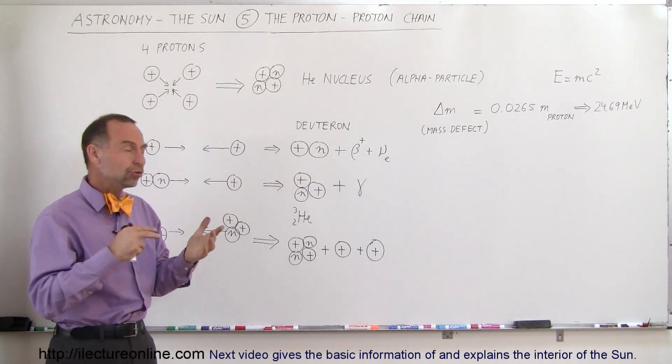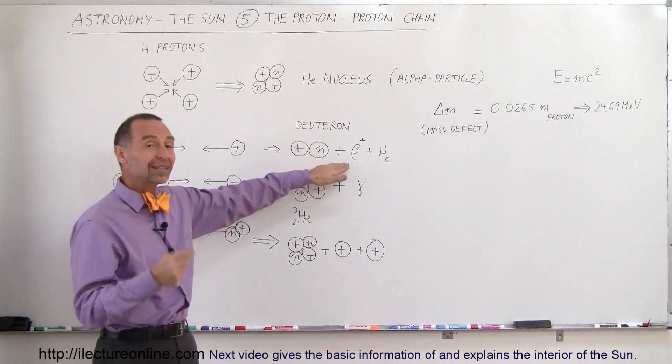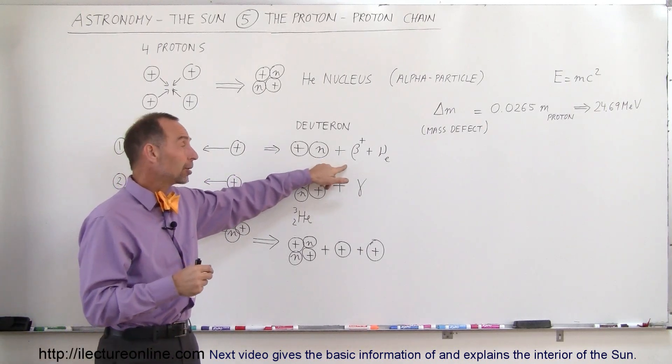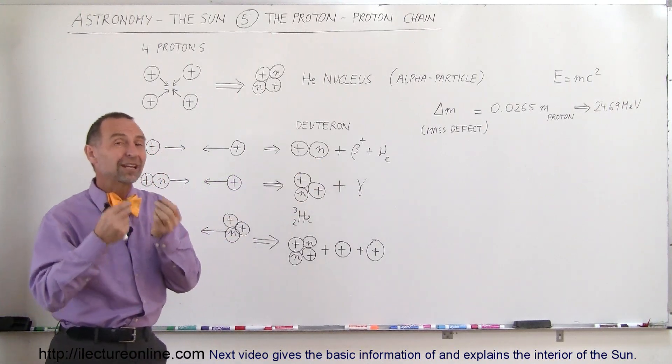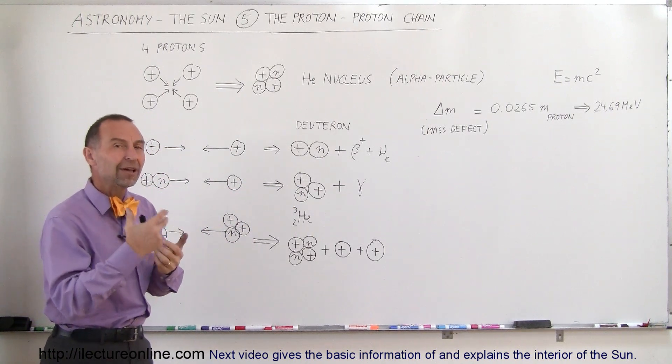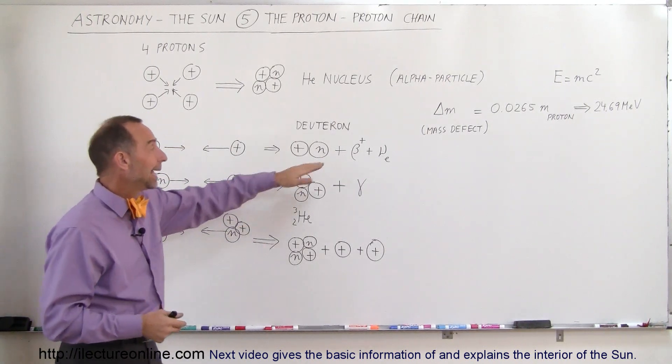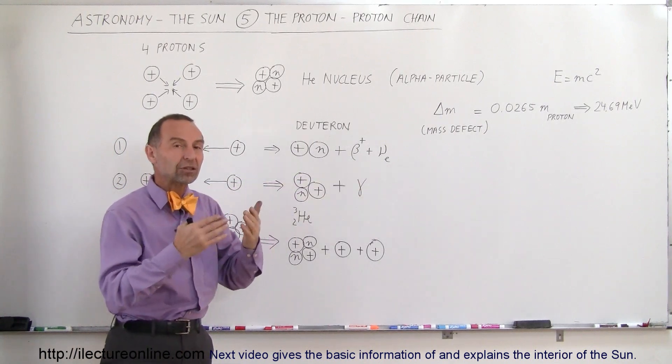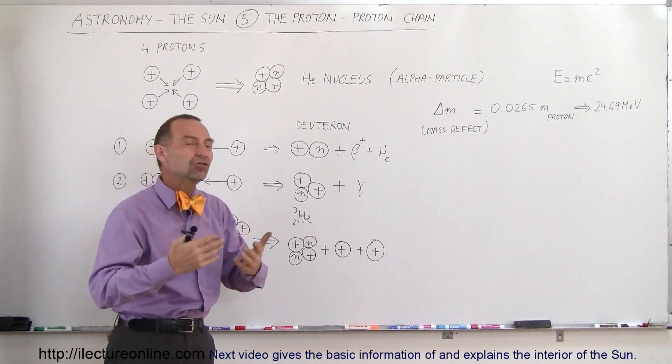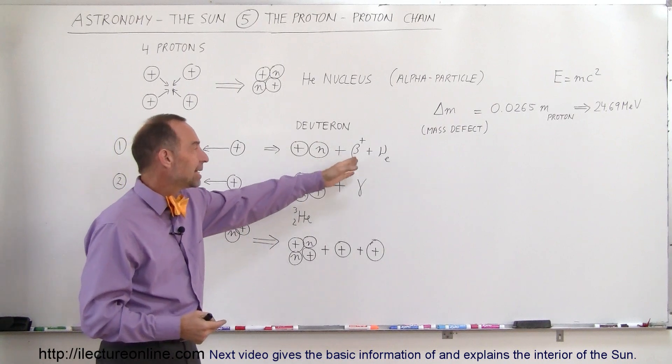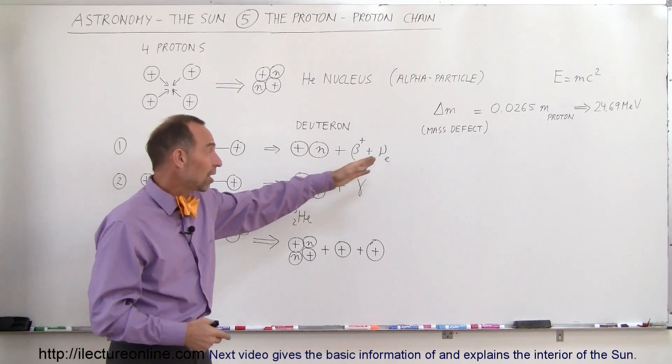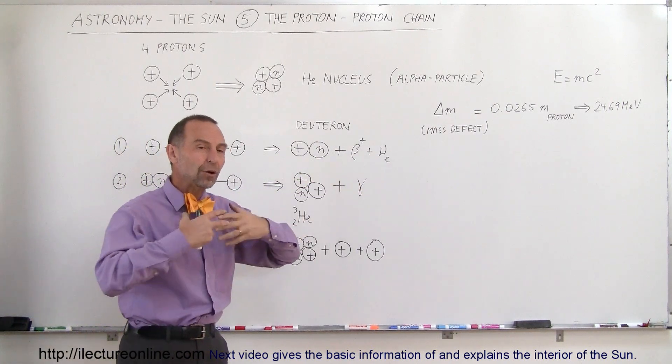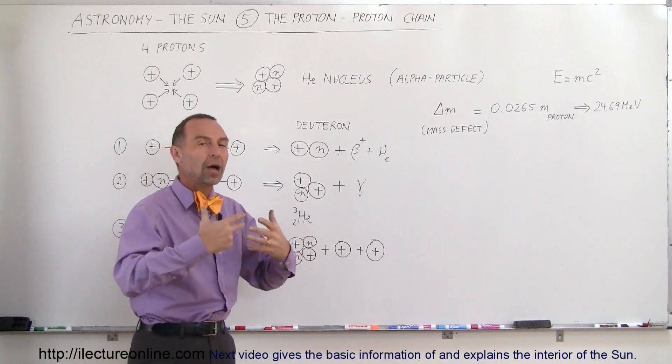How does a proton turn into a neutron? By ejecting a particle that has a positive charge. That particle happens to be the antiparticle of an electron, a positive electron called a positron, and in addition to that, an electron neutrino is being ejected as well, which carries off part of the energy. So the energy carried off by the positron and the electron neutrino is part of how the sun, how stars, generate energy.